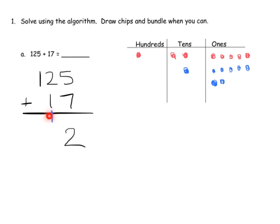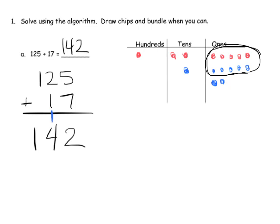12 in the ones place means we can bundle 10 of those together to equal 1, and we will have two left over in the ones place. So 5 plus 7 is 12 — that's one in the tens place plus two left over in the ones place. Now we have two tens plus one ten plus a new ten, and that equals four tens, so we put four in the tens place.